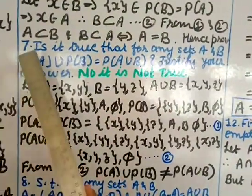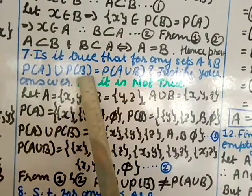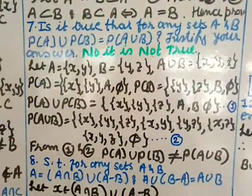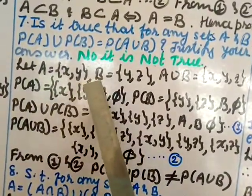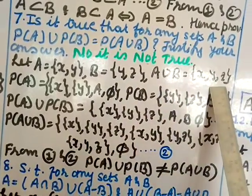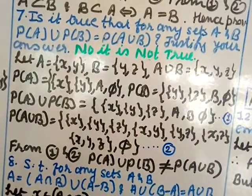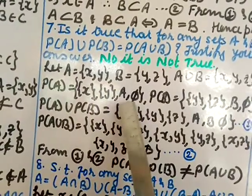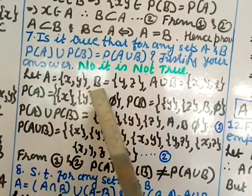Question number seven: is it true that P(A) ∪ P(B) = P(A ∪ B)? This is not true. We justify by example. Let A = {x, y} and B = {y, z}. Then A ∪ B = {x, y, z}. Power set of A: {∅, {x}, {y}, {x,y}}. Power set of B: {∅, {y}, {z}, {y,z}}.